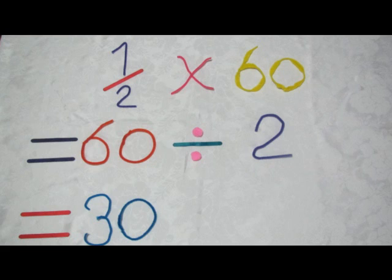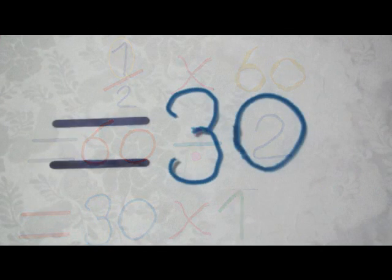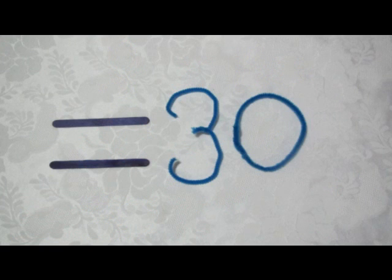So we now have to remember the numerator, because the numerator is also important in this problem. Step 2 is to multiply the answer from step 1 by the numerator. So 30 times 1, which equals 30. Our final answer is that one half of 60 equals 30.